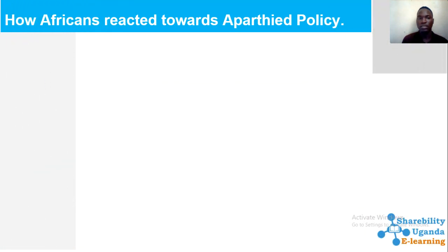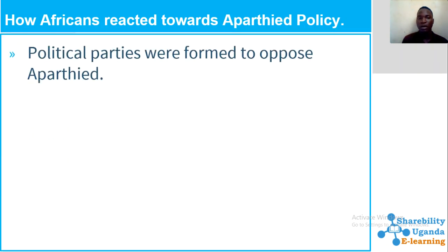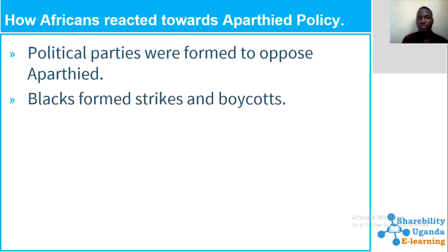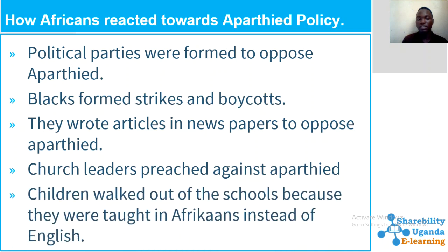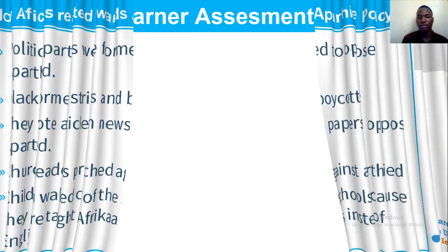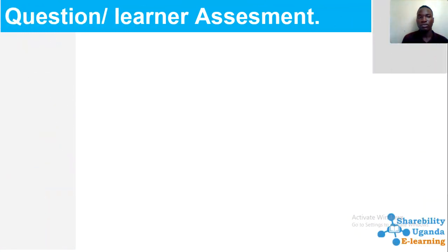Here is how Africans reacted towards apartheid policy: Political parties were formed to oppose apartheid. Blacks formed strikes and boycotts against apartheid policy. They wrote articles in newspapers to oppose apartheid. Church leaders preached against apartheid. Children walked out of school because they were being taught in African languages instead of English, which was seen as a discrimination of their rights.